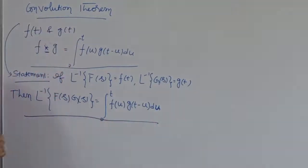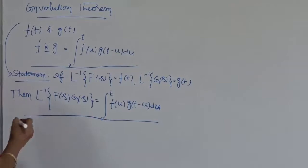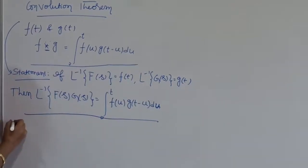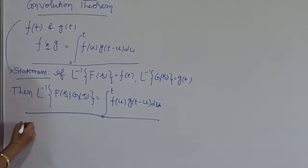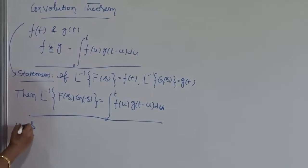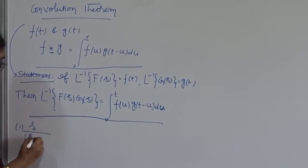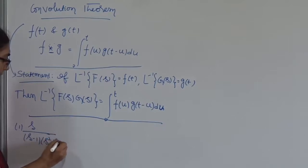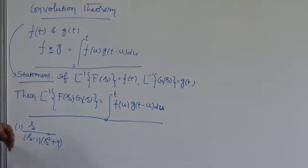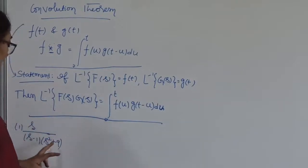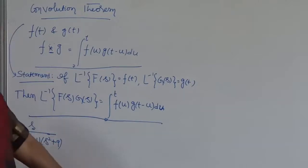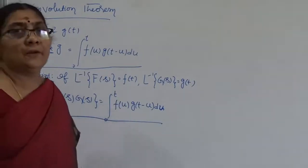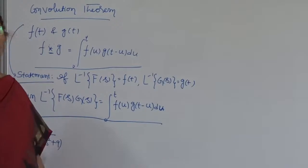Now I am going to explain how to solve a problem using this theorem. The function is s divided by (s minus 1) times (s squared plus 9). The question asks us to find the inverse Laplace transform of this function using the convolution theorem.